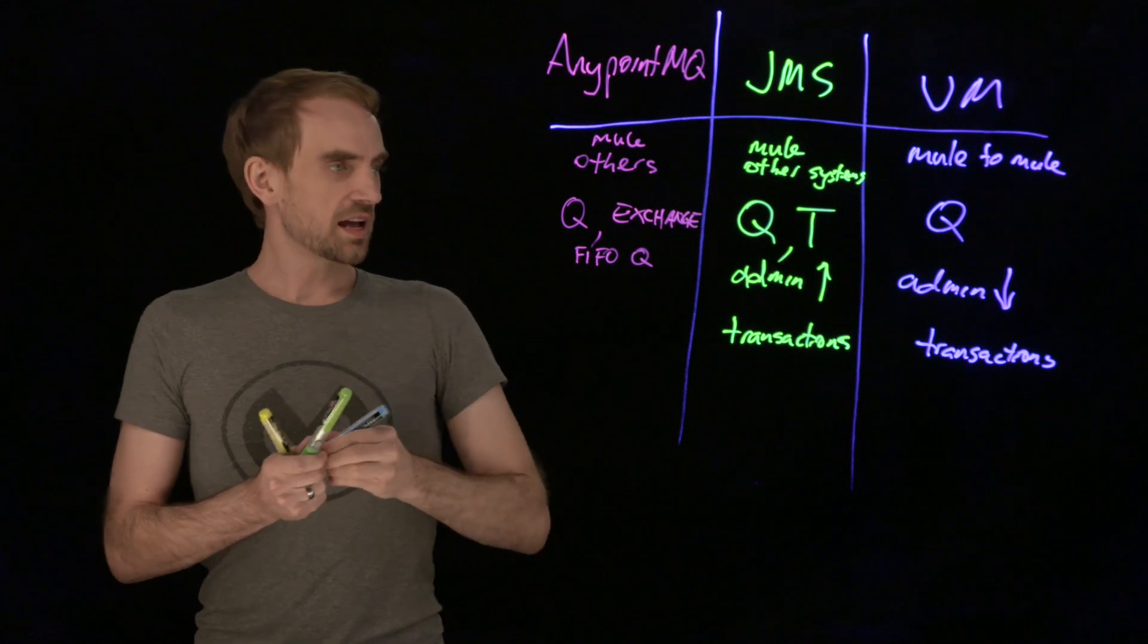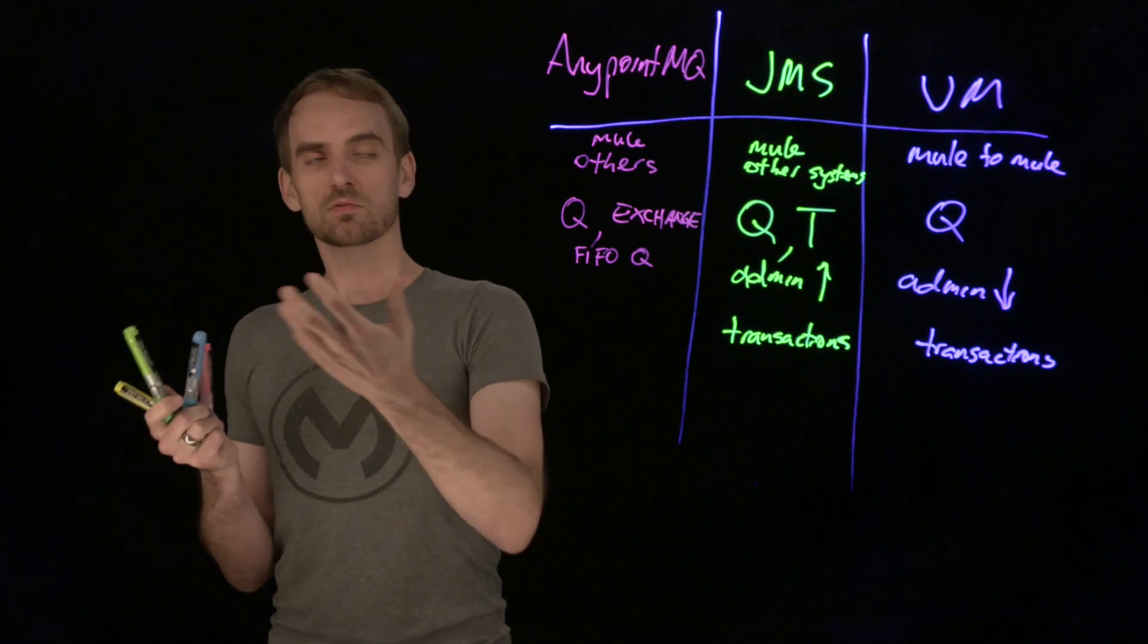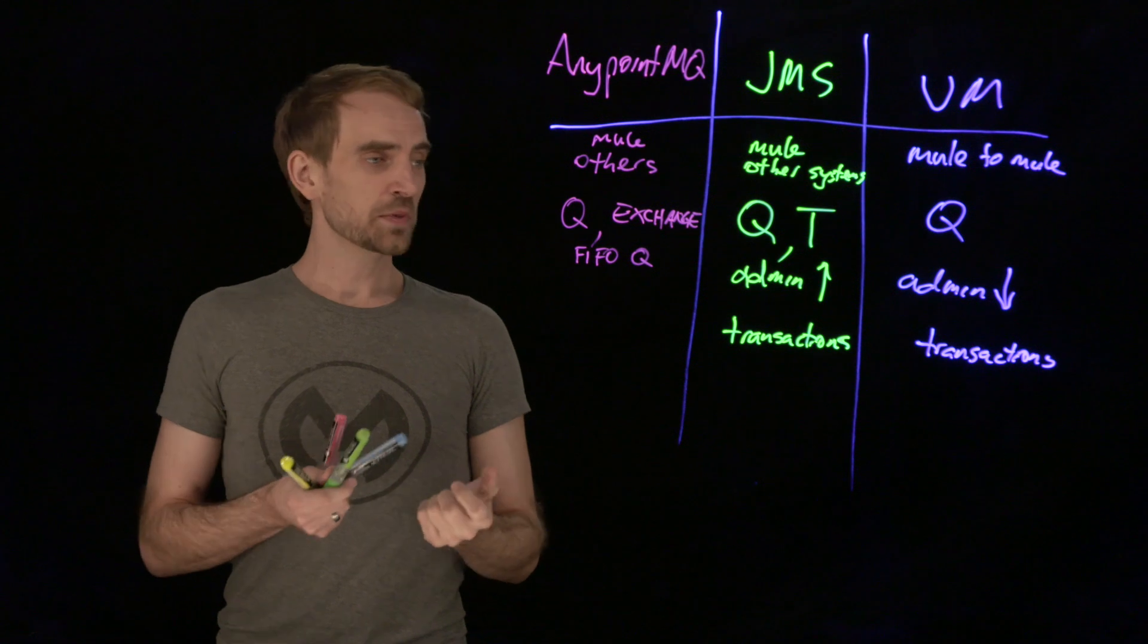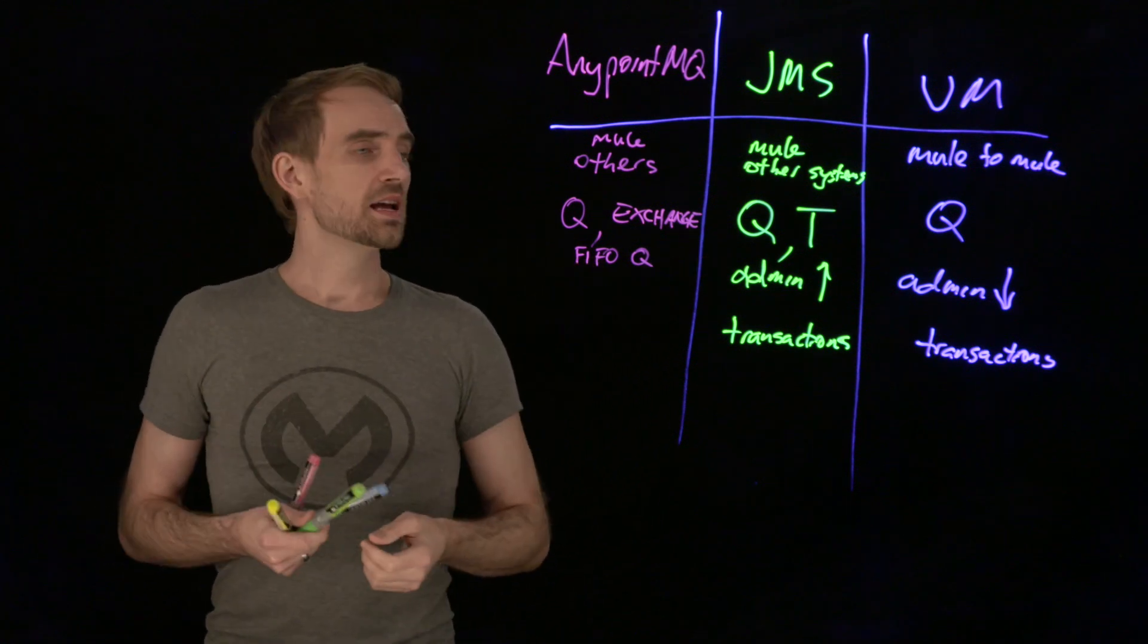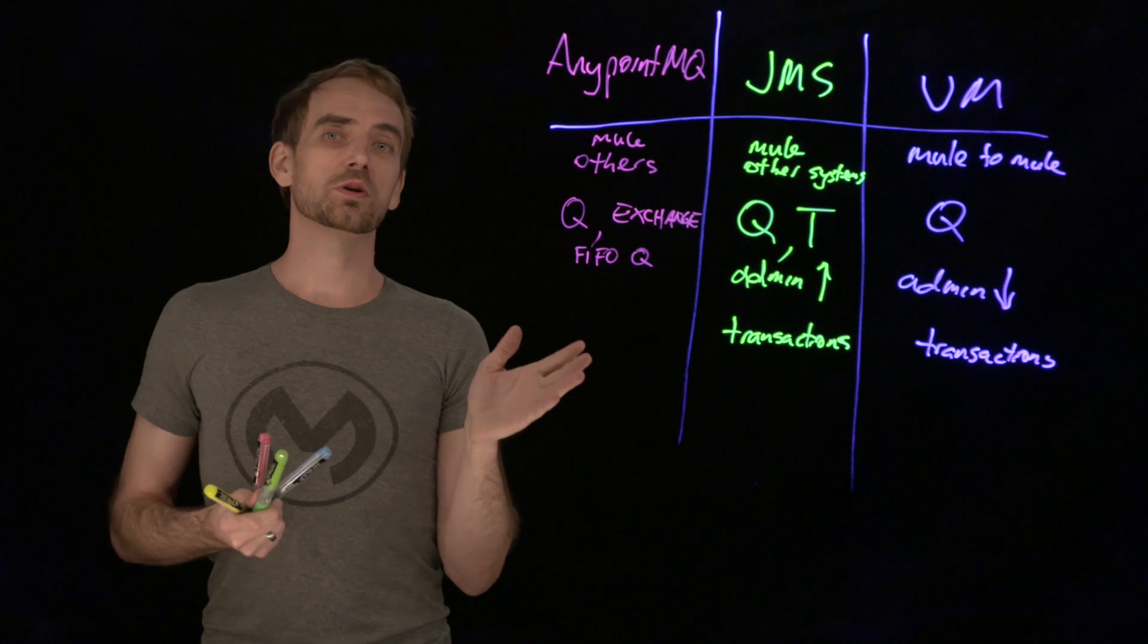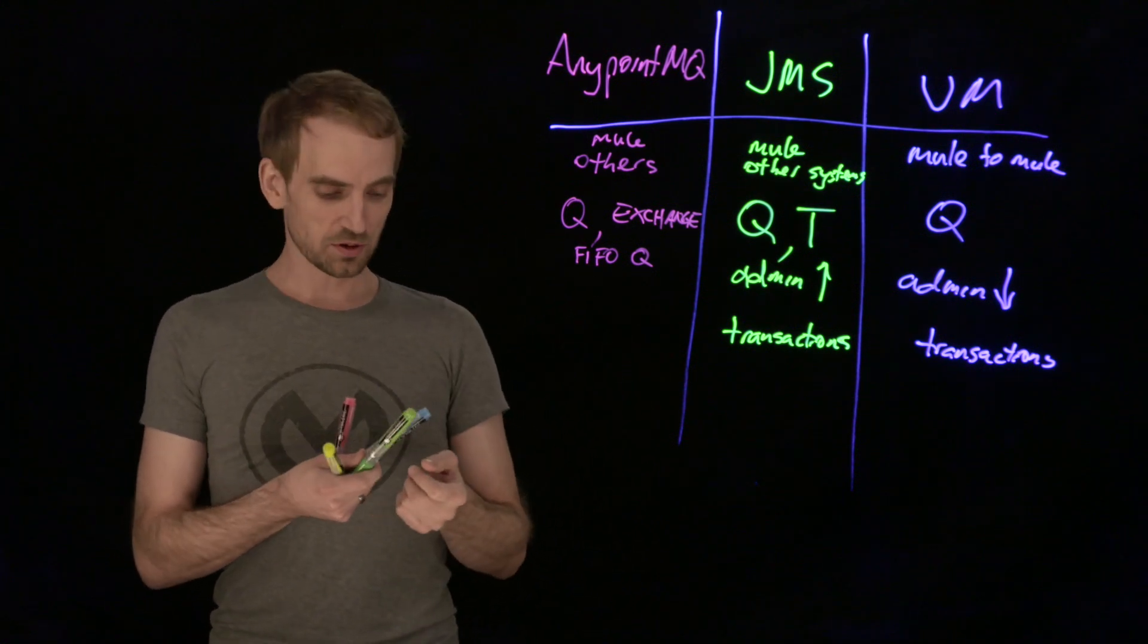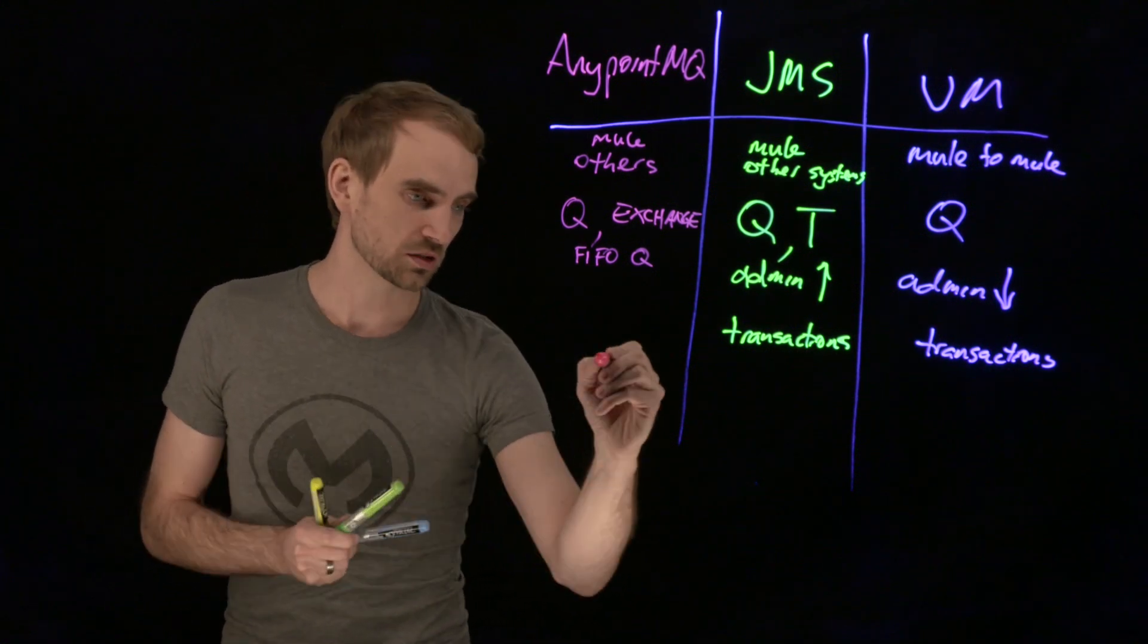And there is another way that messaging providers use to signal that they can delete the message out of the queue, or whatever the concept is, and that's called acknowledgements. VMs don't support acknowledgements, but JMS has an acknowledge mode, and AnyPointMQ can also do this sort of notion.